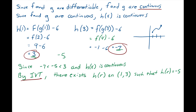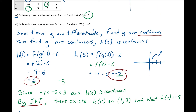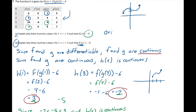Now let's look at part B. Part B asks us to explain why there must be a value c, for c greater than 1 and less than 3, such that h prime of c equals negative 5. That looks eerily similar to part A, but the difference is we are now dealing with the derivative — it's h prime of c. When you're trying to show that there is a value on an interval involving a derivative, you use the Mean Value Theorem.